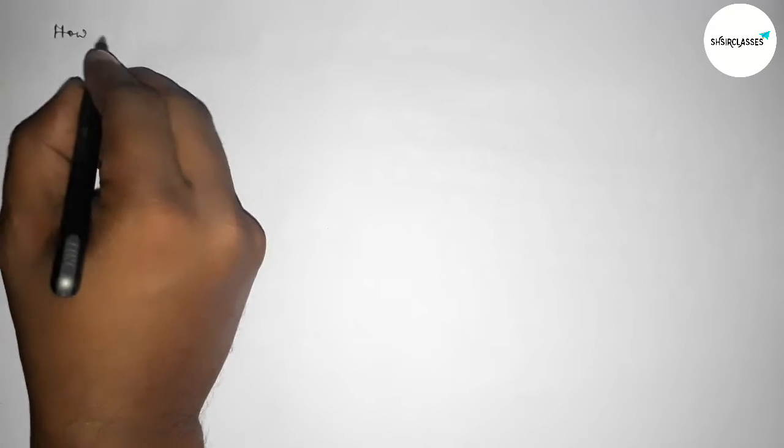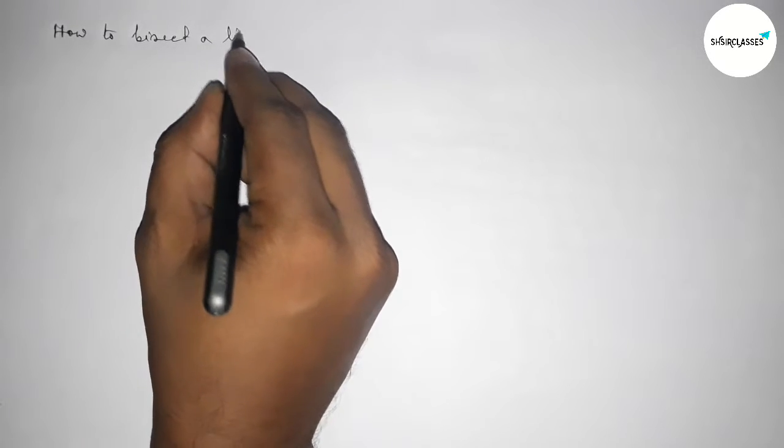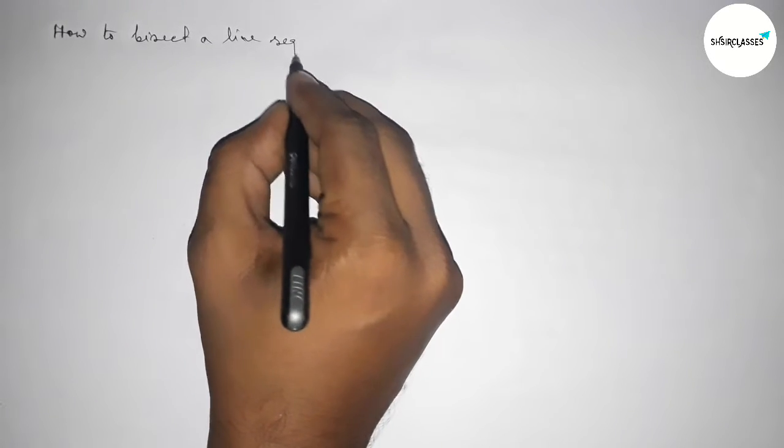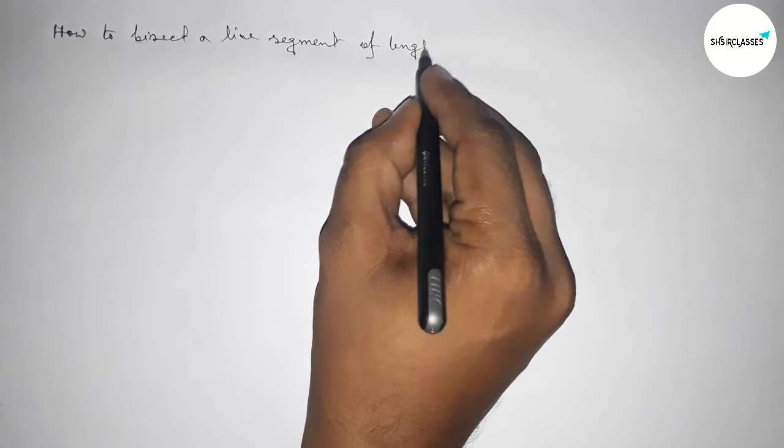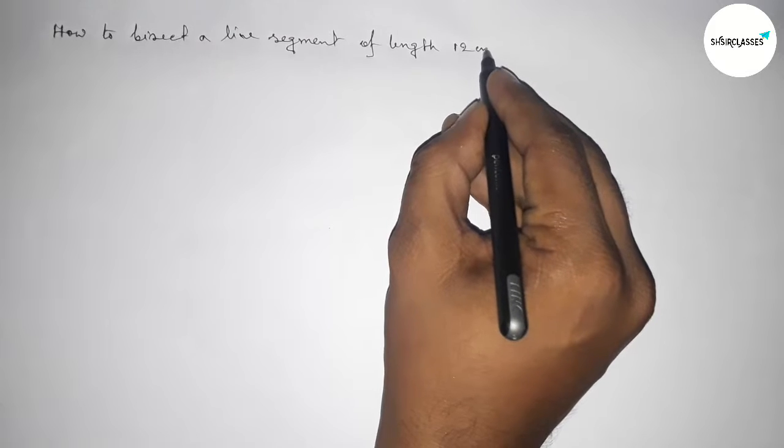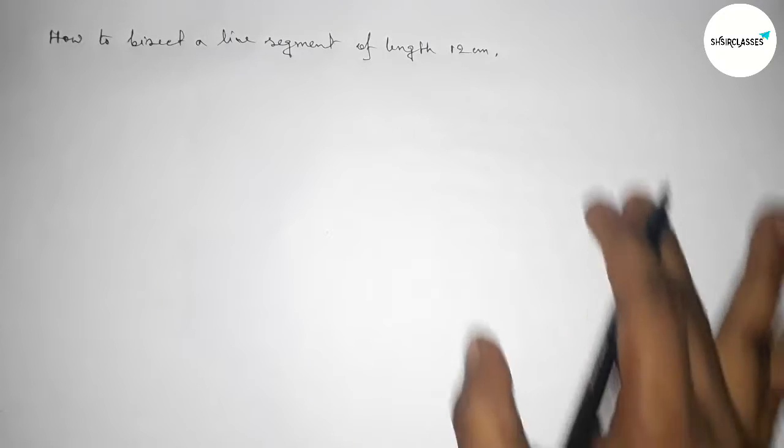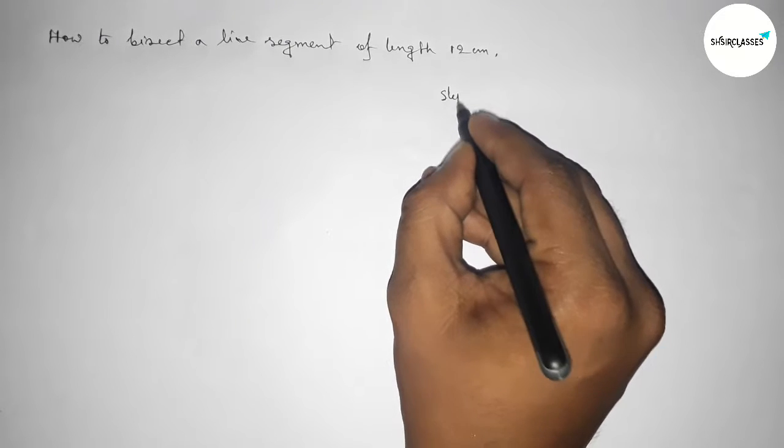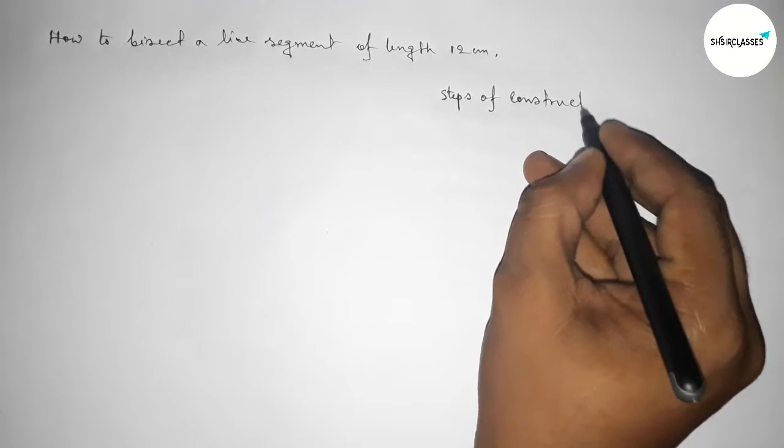Hi everyone, welcome to Essay Share Classes. Today in this video we're discussing how to bisect a line segment of length 12 centimeters by using a compass in an easy way. So let's start the video. First of all, leaving here some space to write the steps of construction.